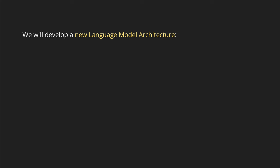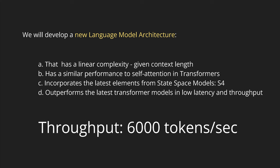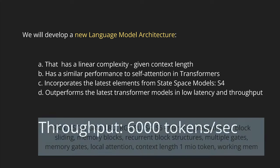What do you think — we develop here a complete new language model architecture, and we have a clear goal. It should have a linear complexity, so it's not transformer-based. It has a similar performance to the self-attentional transformer, but different. It will incorporate the latest insight from the state-space models, especially some symmetry mathematical configurations of S4. And it should outperform the latest transformer model regarding two keys: low-latency and throughput — about 6,000 tokens per second.